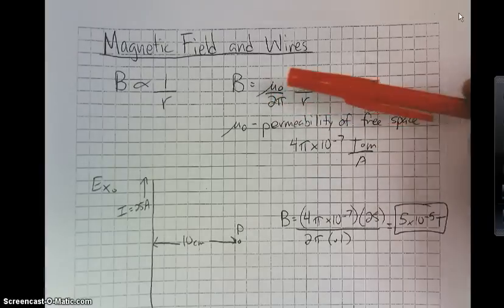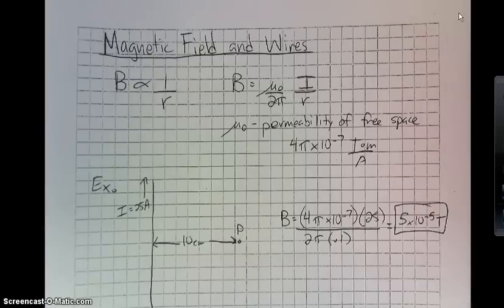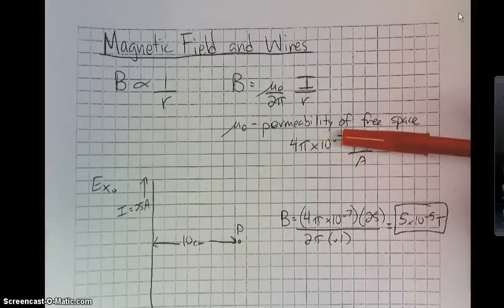Now, this μ₀ is known as the permeability of free space. It is a constant. It is in both the AP and the IB packets, so there's nothing to freak out about.